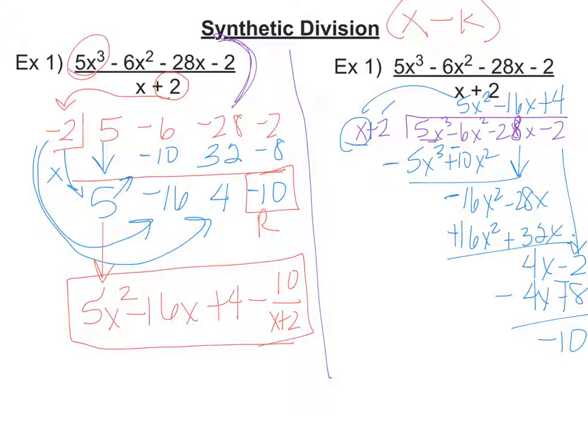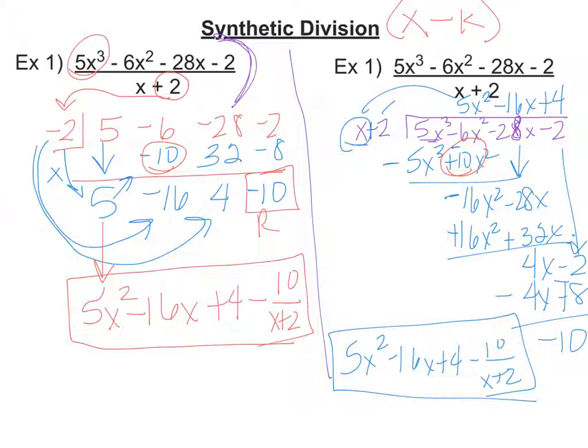So it's the same deal where we end up with 5x squared minus 16x plus 4 minus 10 over that x plus 2. Same deal. Now look at where the similarities are in this. Here I have this negative 10 matches up with this negative 10. This 32 matches up with this 32. This negative 8 matches up with this negative 8. So that's where those numbers match up, and obviously then your answer matches up with your answer. So that's how it works, but the big deal with synthetic division is that pattern, recognizing that pattern and doing it over and over and over again.